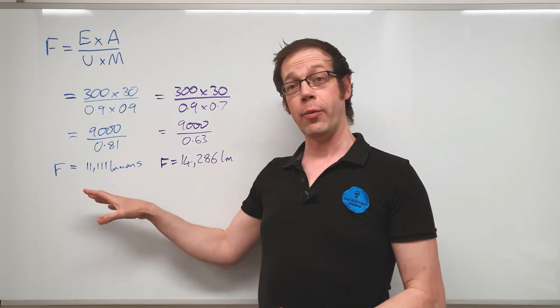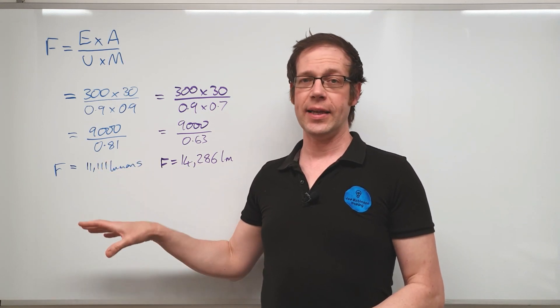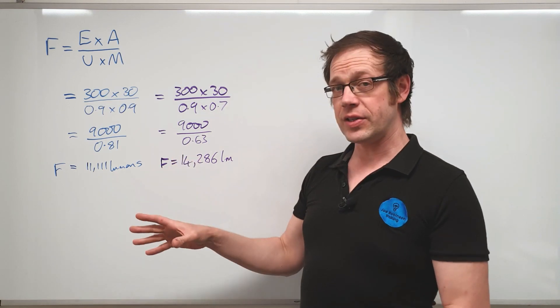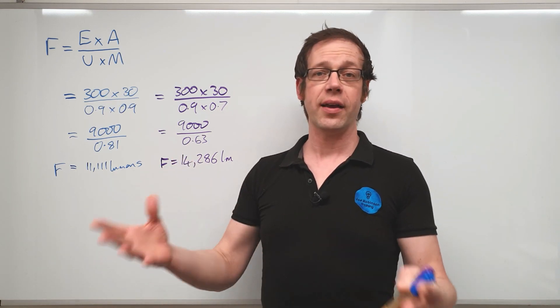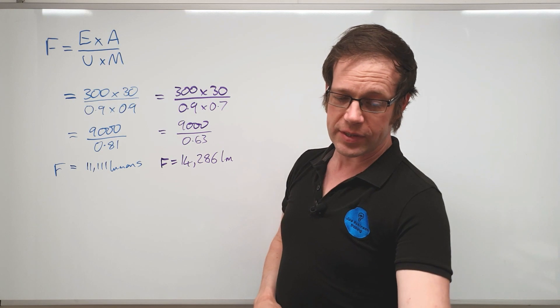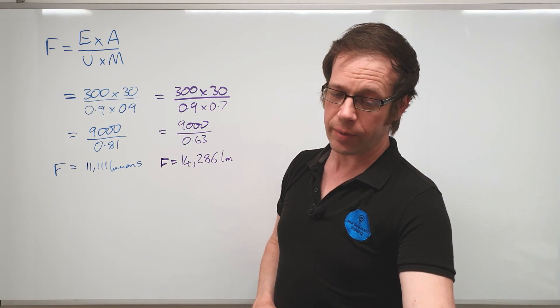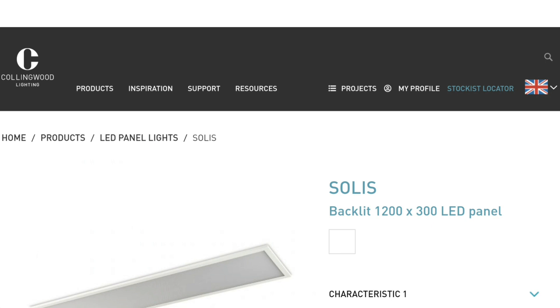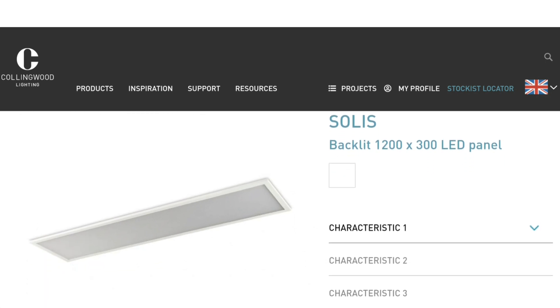How do we get from the number of lumens required to illuminate our space to the correct level, and how we arrive at the correct number of fittings to install? So it's very simple. All we've got to do is pick our light fitting.